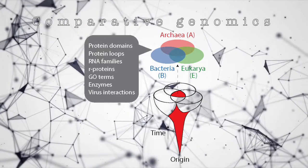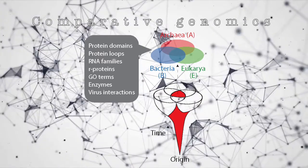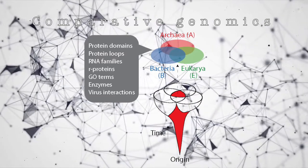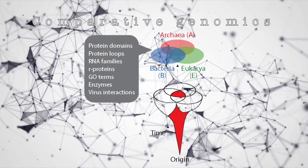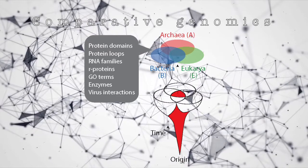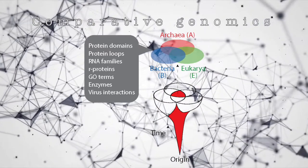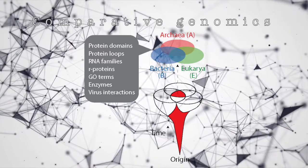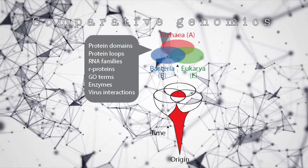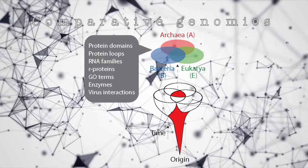This includes an exhaustive census of conserved protein domain structures, protein domain loops, RNA families, ribosomal proteins, gene ontology terms defining the molecular functions and biological processes of genes, ancient metabolic enzymes, and the range of virus-host interactions for each major superkingdom.